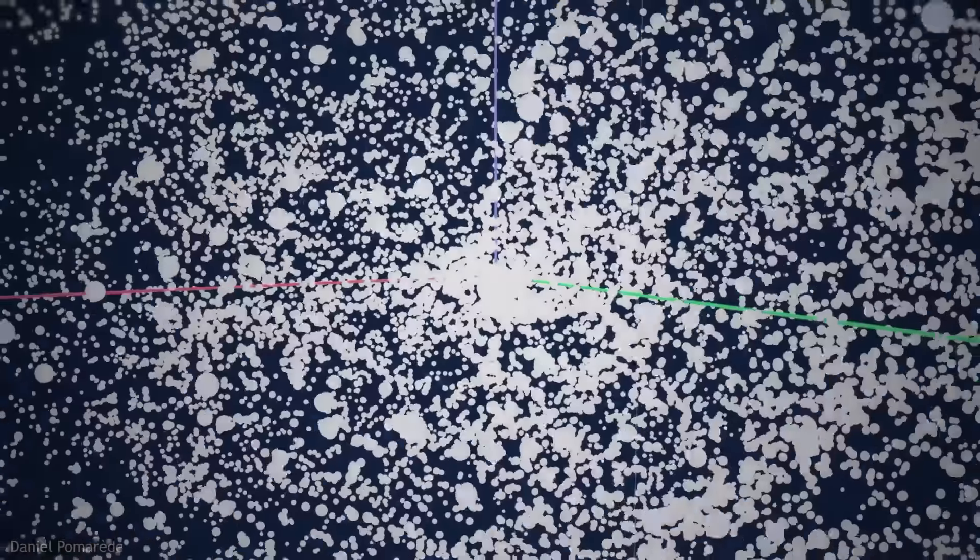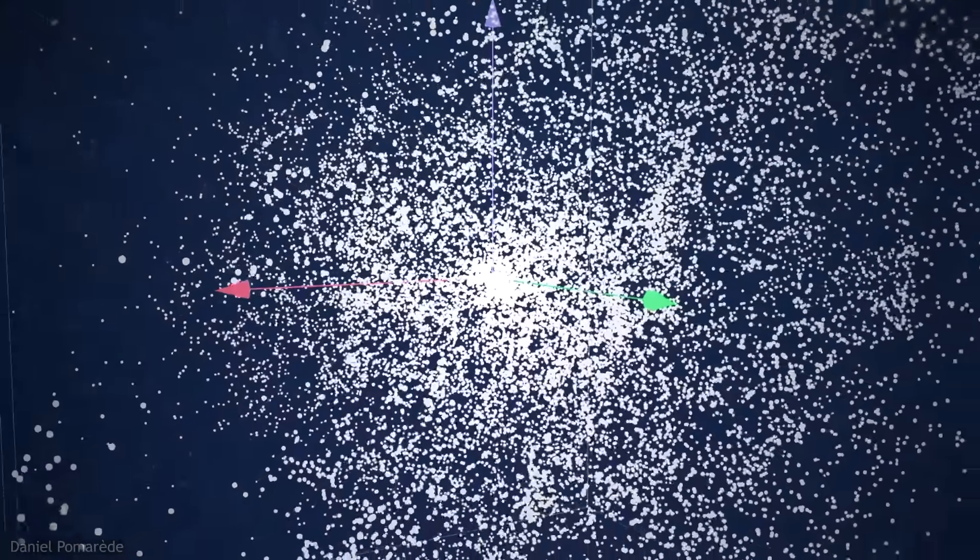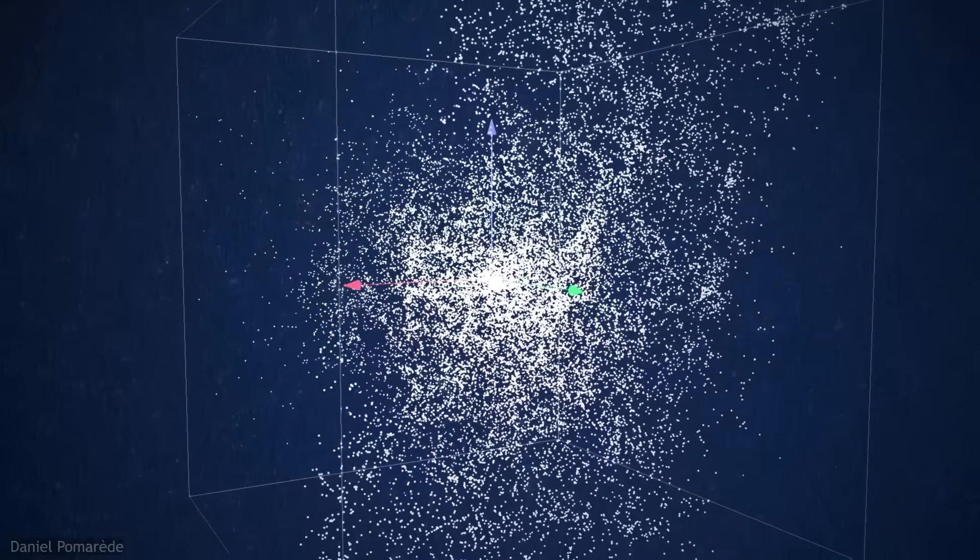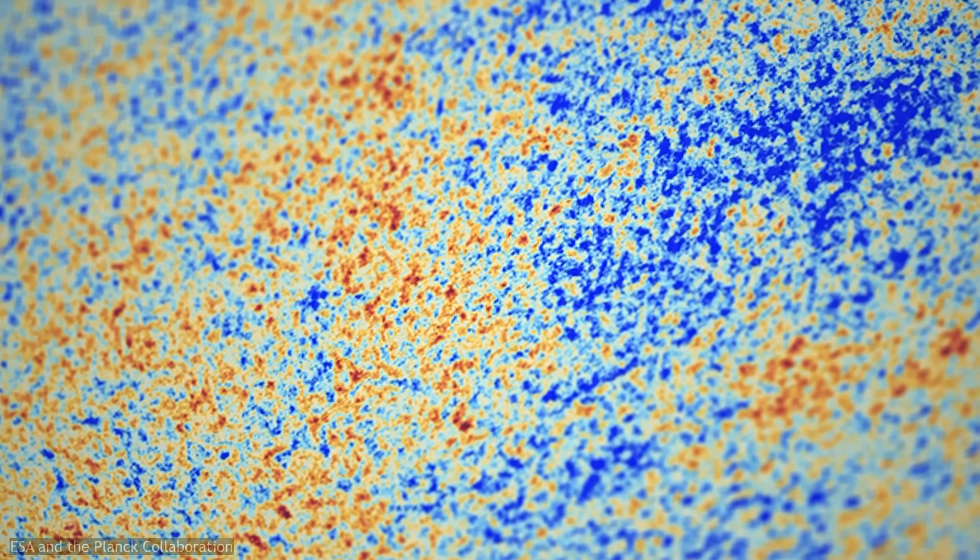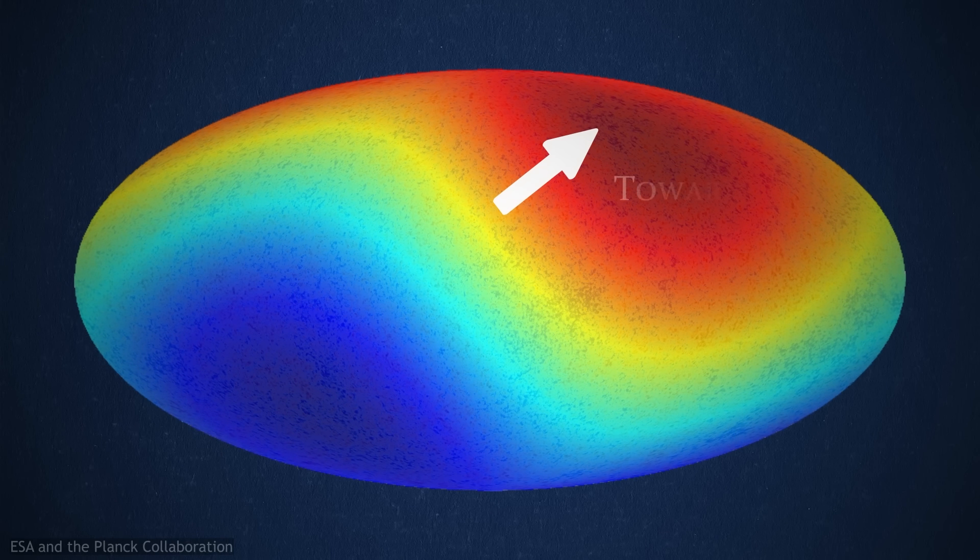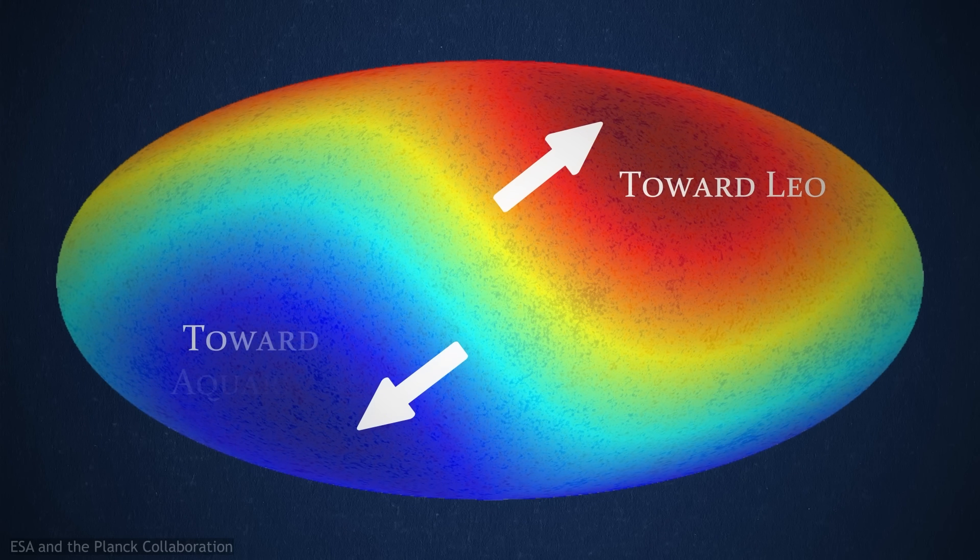The galaxies that Tully and Fisher mapped seemed to share a common locus, their reconstructed velocities all roughly pointing in the same direction. As for the cosmic microwave background, its temperature across the sky revealed a bias. It was slightly hotter in one direction and slightly cooler in the other.